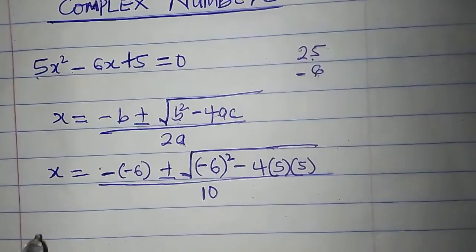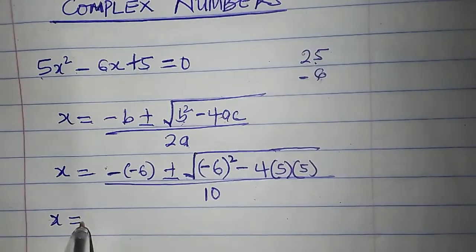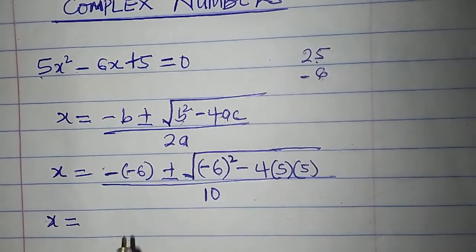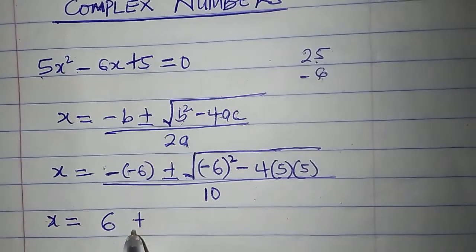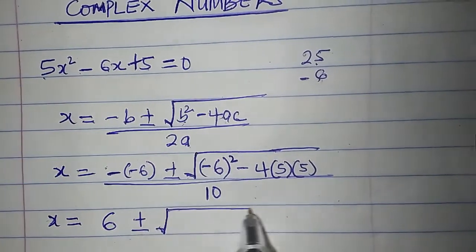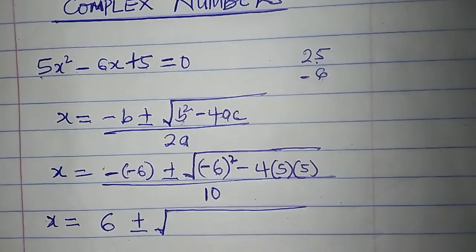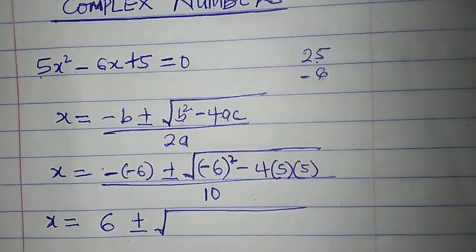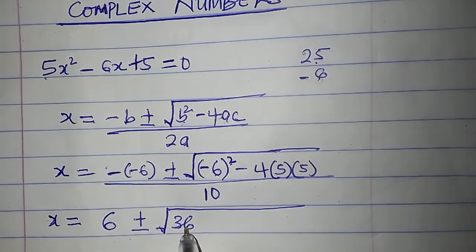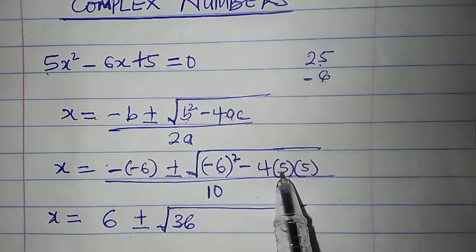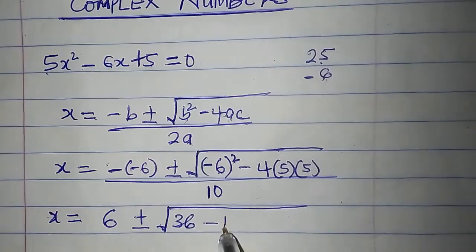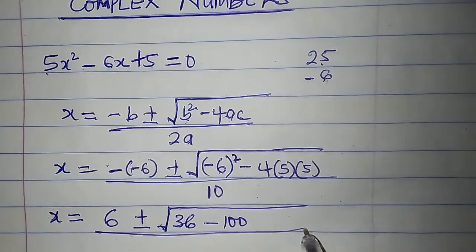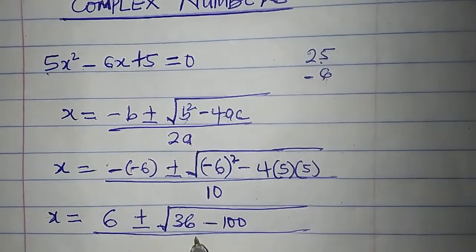So we have X equal to — minus minus is a plus — that's plus 6, plus or minus the square root of: minus 6 squared is 36, and 4 times 5 is 20, 20 times 5 is 100. So we have 36 minus 100, all divided by 10.